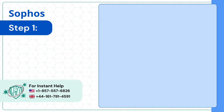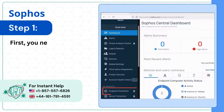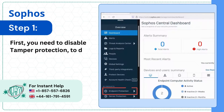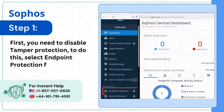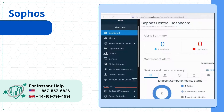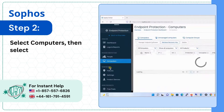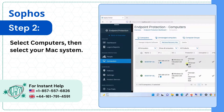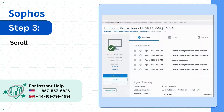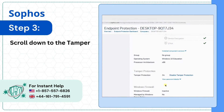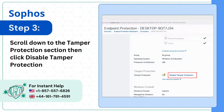Step 1. First, you need to disable tamper protection. To do this, select Endpoint Protection from the Sophos Central Dashboard. Step 2. Select Computers, then select your Mac system. Step 3. Scroll down to the Tamper Protection section, then click Disable Tamper Protection.